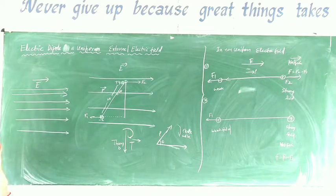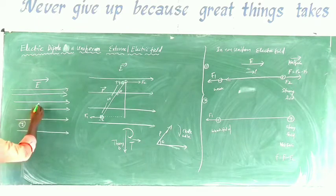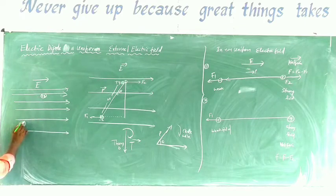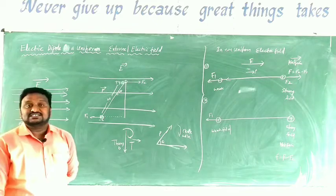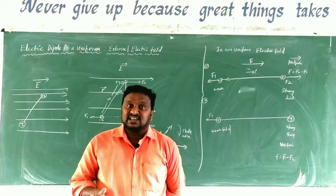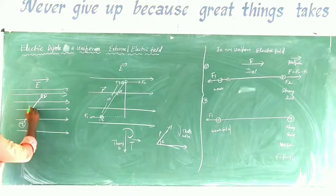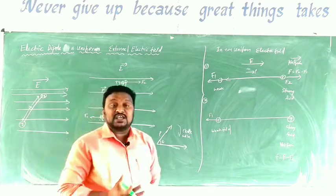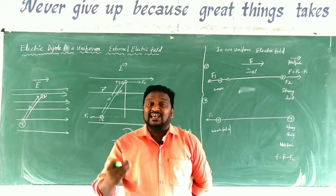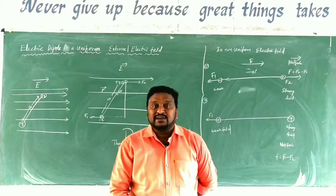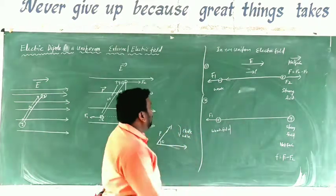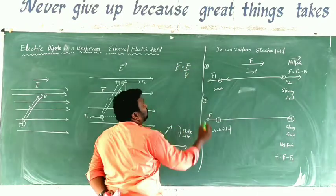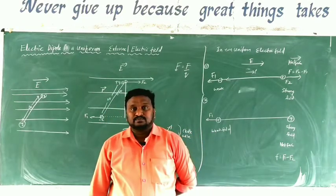In the uniform electric field of intensity E, we place an electric dipole — a minus q charge and a plus q charge — separated by some distance. The length of the dipole is taken as 2a. We know the electric field intensity: E = F/q, which means the force experienced by a charge placed in the field.